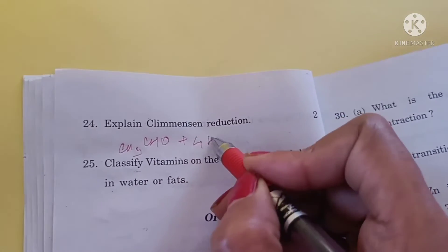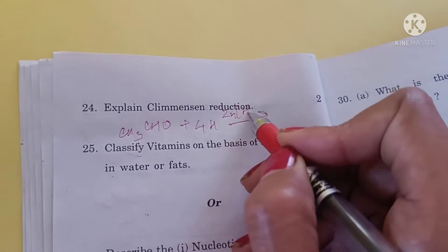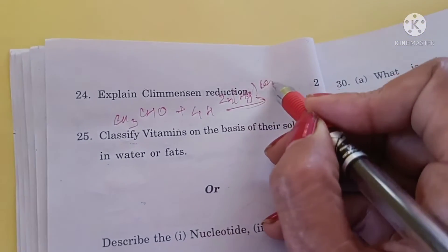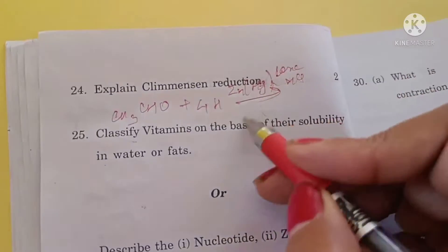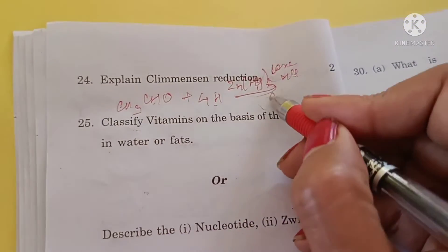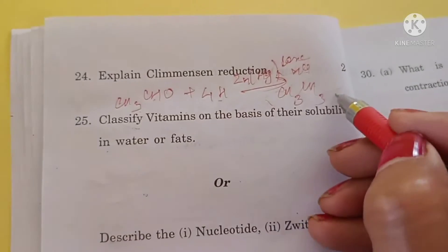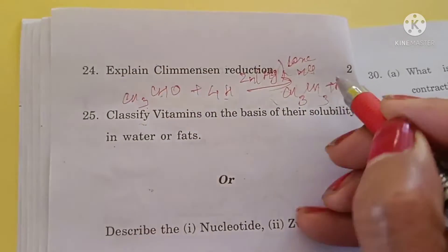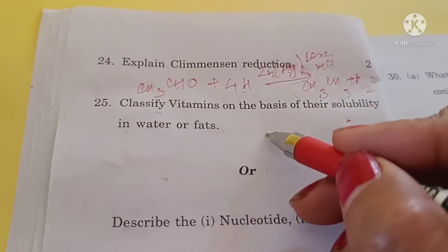Explain Clemmensen reduction with an example: when acetaldehyde is reduced using zinc amalgam and concentrated HCl, the carbonyl group is reduced to a CH2 group giving an alkyl group with the same number of carbon atoms, and water is formed. This reaction is Clemmensen reduction.